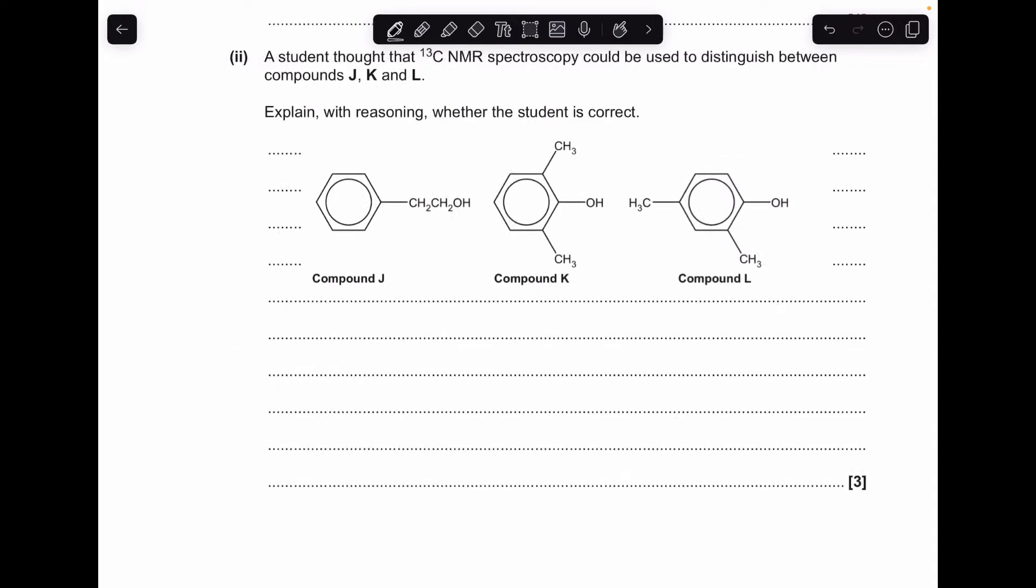Moving on to the next part, can carbon-13 spectroscopy be used to distinguish between J, K and L? We'll have a quick look at how many carbon environments each one's got and see if it's possible. Starting with compound J, we've got an environment there, an environment there, there's another one, these are equivalent so that's number four, they're equivalent that's number five, there that's obviously unique so that's number six.